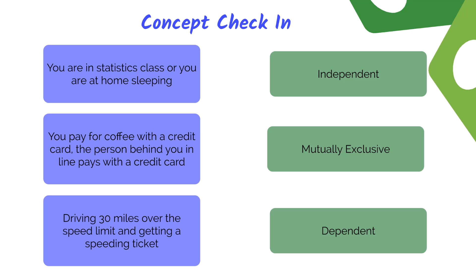Let's do a quick concept check on the different types of events. First scenario: you can either be in class or at home sleeping — is this independent, mutually exclusive, or dependent? If you said mutually exclusive, you are right, because you can't be in two places at the same time. Second scenario: you pay for coffee with a credit card and the person behind you also pays with a credit card — are these independent or dependent? Since you don't normally know the person behind you, this is an independent event. Last scenario: you're driving 30 miles over the speed limit and get a speeding ticket — this is a dependent event.